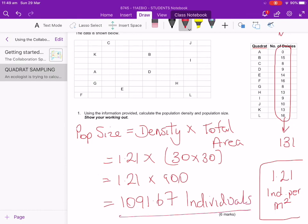And that's as difficult as it gets really. You've got to start off by calculating your population density. Once you know your population density, you can then work out your population size.